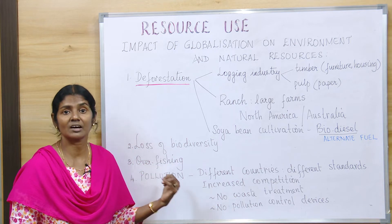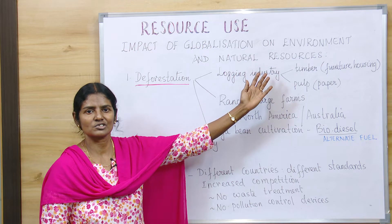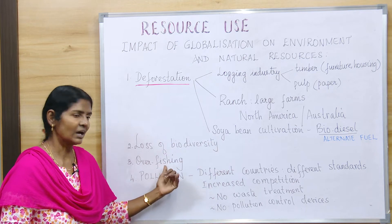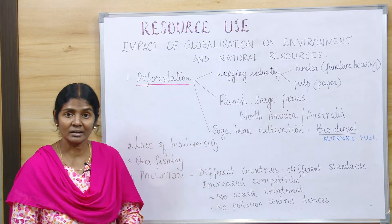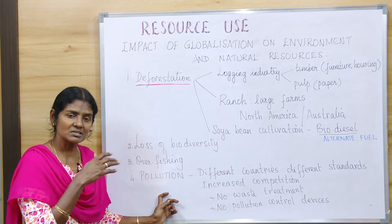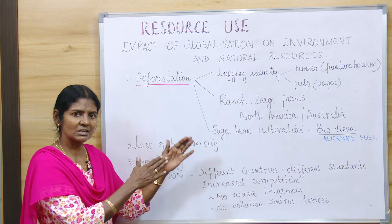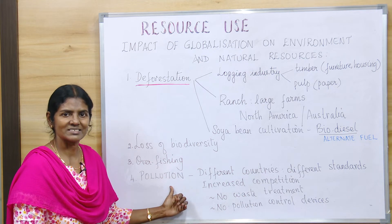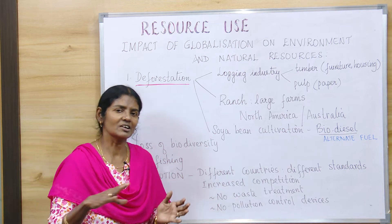The next issue is pollution. These points about deforestation, biodiversity loss, and overfishing can be grouped under natural resources — we are losing our forests, plants, animals, birds, and aquatic organisms. Pollution is indirectly connected, because as natural resources are cut down or depleted, pollution increases. This pollution spreads from one country to another, as different countries have different standards.